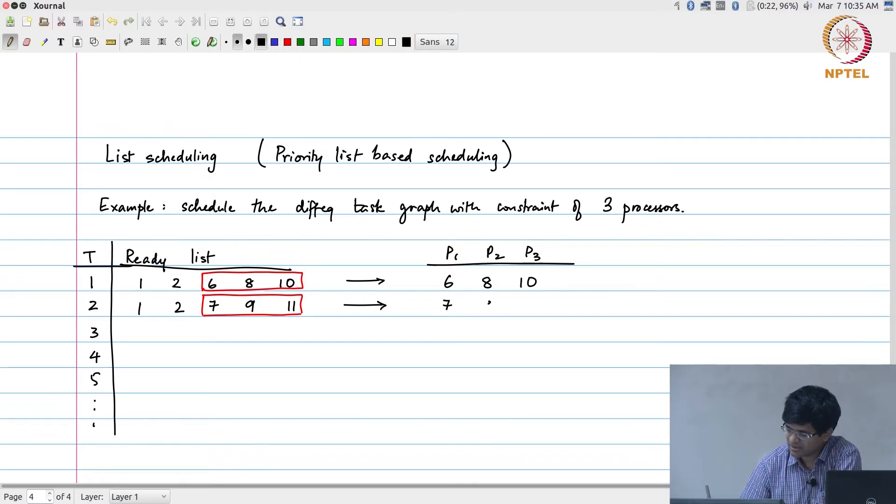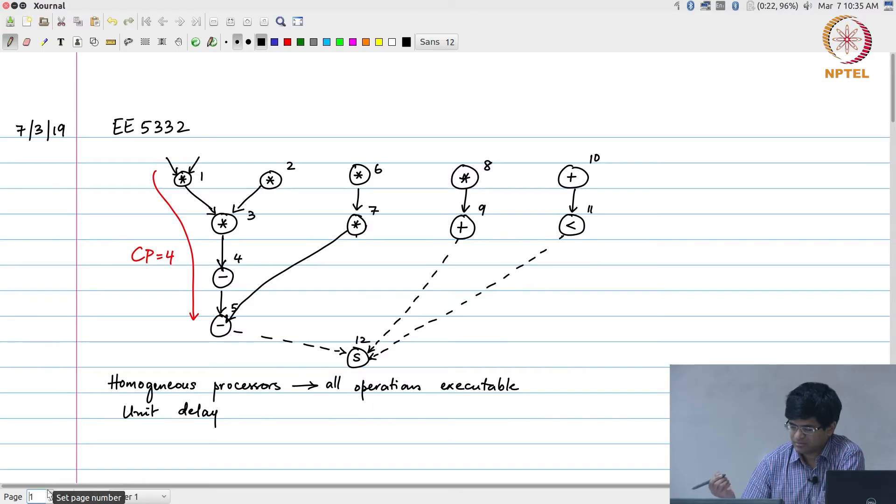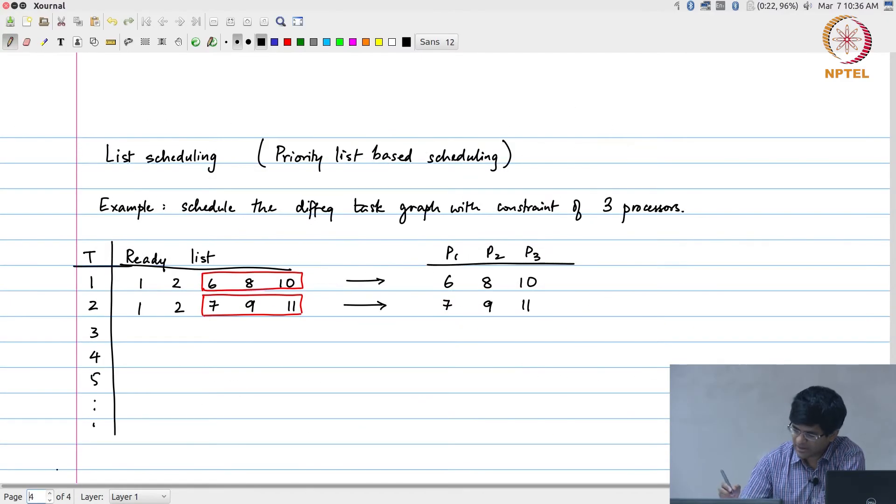I would then end up with 7, 9, and 11 over here. What happens after that? It turns out that now I'm stuck with only 1 and 2 being ready because nothing new came out of 7, 9, and 11 being executed. Schedule both of them. What I get is 1 over here, 2 over here. After they are done 3 will be ready, execute that, 4 will be ready in the next step, and finally 5 will be ready over here.